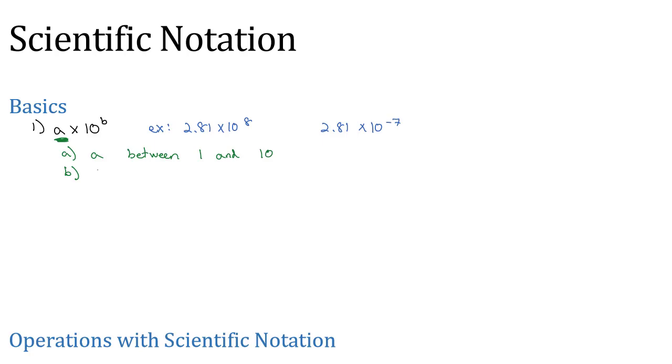In addition, the b, that exponent, moves the decimal point. It tells us how many times to move that decimal point.